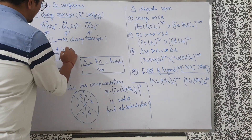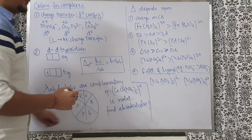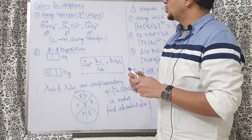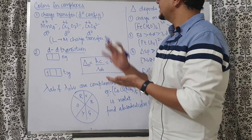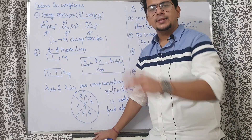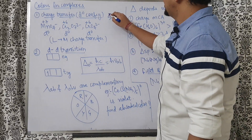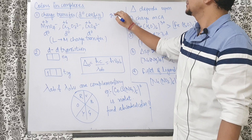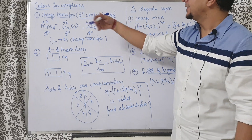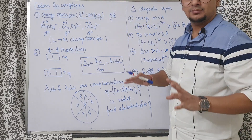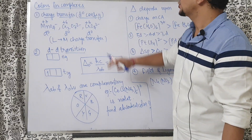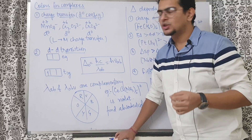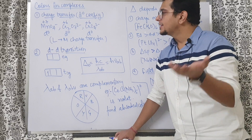For d0 configuration, very specific examples are MnO4⁻, Cr2O7²⁻, and CrO4²⁻. In MnO4⁻, Mn is in +7 oxidation state. Manganese has an s2d5 configuration (atomic number 25), so with +7, all 7 electrons are apparently gone, leaving a d0 configuration. Similarly, chromium has s1d5 in its last shell — those electrons are also gone, giving a d0 configuration.